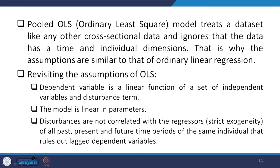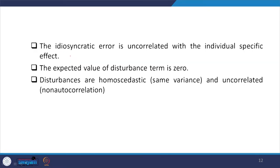Disturbances are not correlated with the regressors — that is called strict exogeneity of all past, present, and future time periods that have been pooled together in the data. It rules out lag dependent variables. The idiosyncratic error is uncorrelated with the individual-specific effects. The expected value of the disturbance term is 0, disturbances are homoscedastic — having the same variance — and uncorrelated, which means non-autocorrelation.